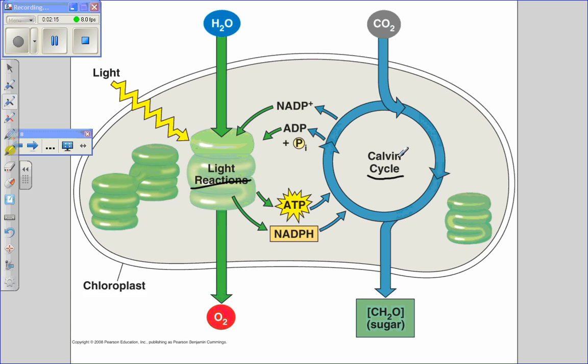The light-dependent reactions occur first and require an input of water and light. They produce three things: oxygen we breathe, NADPH, and ATP.